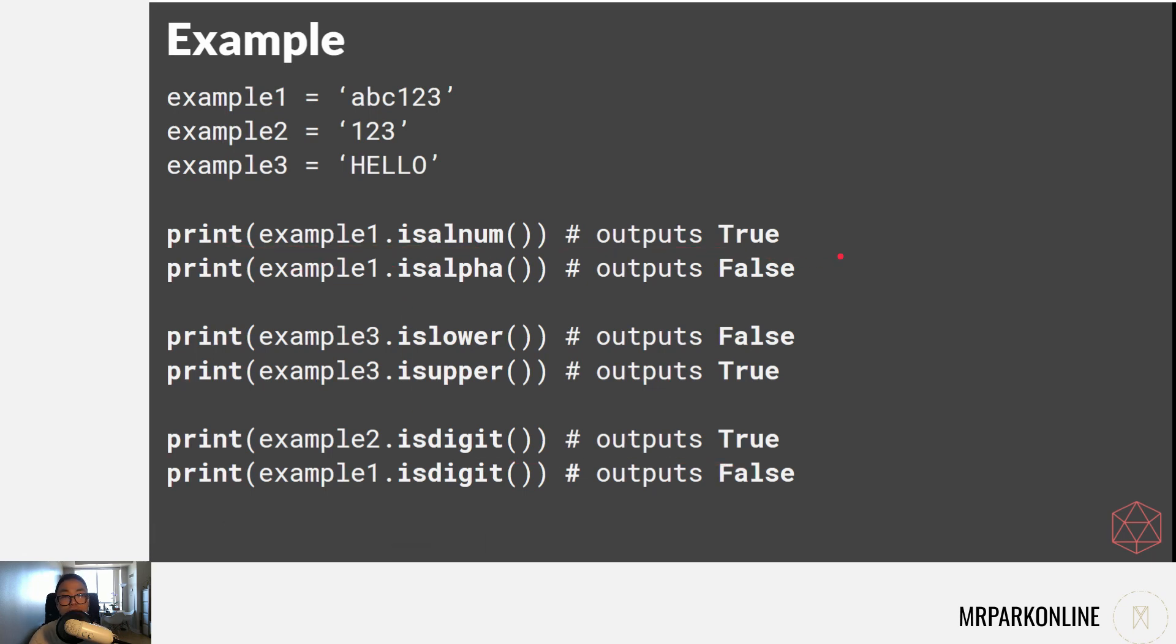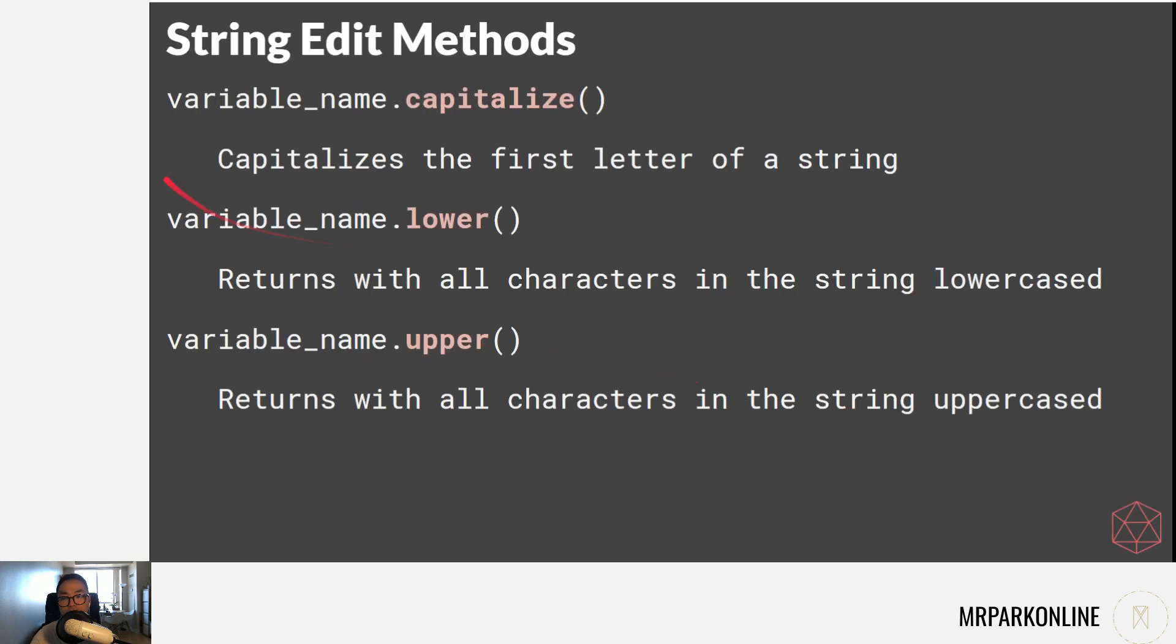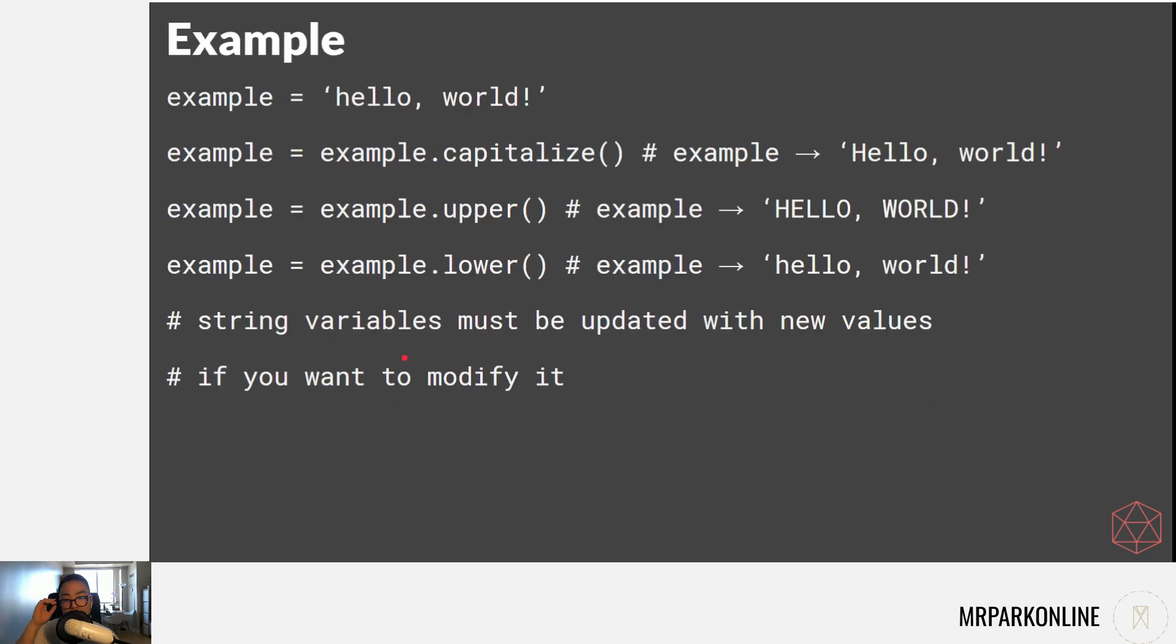The last method we're going to talk about today is string edit methods. These help us edit our strings. If I wanted to capitalize the first letter of a string, I can say string.capitalize(). Remember strings are immutable, so if you want to update that variable with the capitalize method on it, you have to say variable_name = variable_name.capitalize(). Variable.lower() makes all characters lowercase, whereas upper() makes everything uppercase. Capitalize affects the first letter; lower and upper affect all the characters in the string.